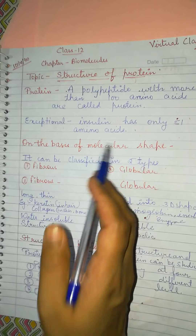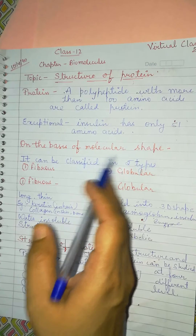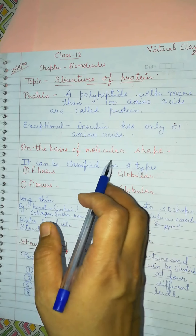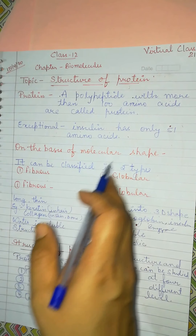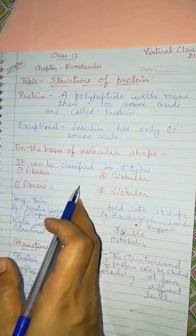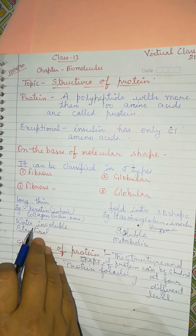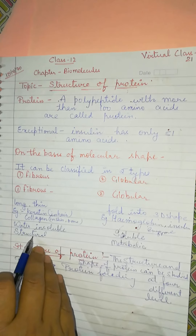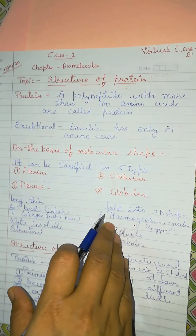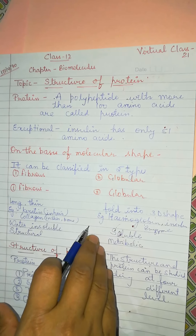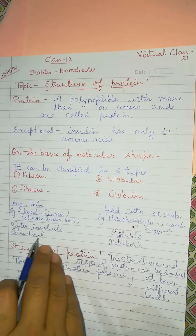Now they divided the structure of protein according to molecular shape. According to molecular shape, proteins are classified into two types: fibrous and globular. Fibrous proteins are long and thin, water insoluble, and are structural proteins. Globular proteins are folded — hemoglobin and insulin are examples — they are soluble in water and carry out metabolic processes.